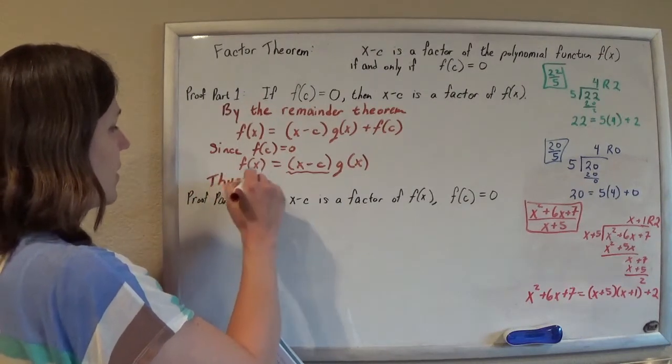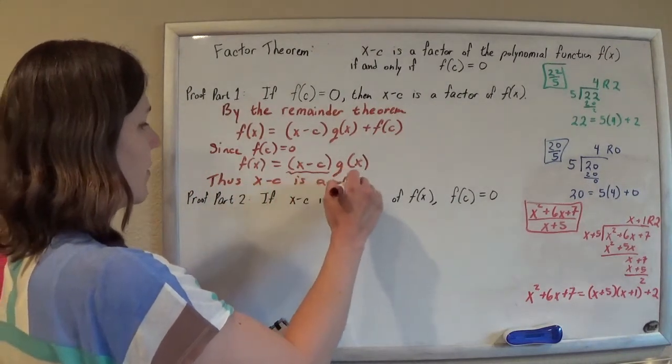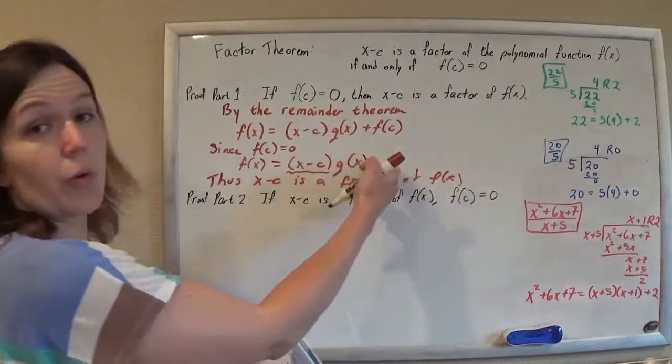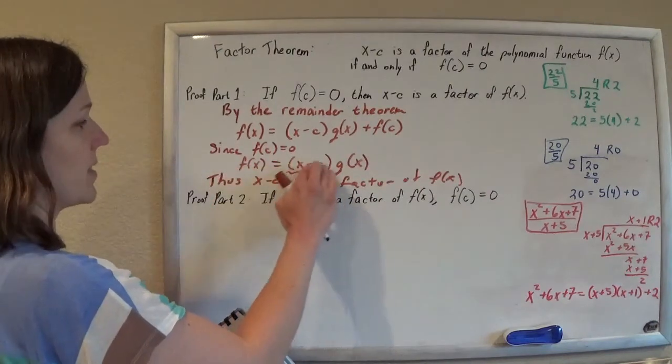So, thus, x minus c is a factor of f of x. It goes in with no remainder, right? I can write f of x as this times that.